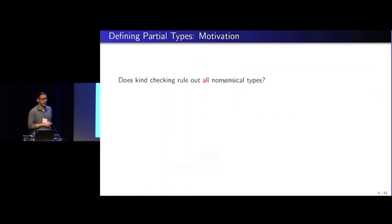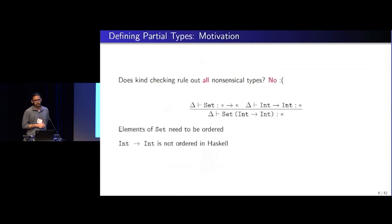But although this looks like a necessary condition, is this a sufficient one? It turns out to be, well, it's not. Because you can have things like set, and set is of kind star to star. You can have an integer to integer function which has kind star.